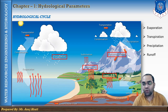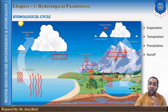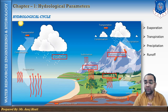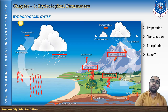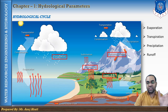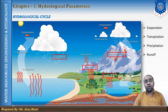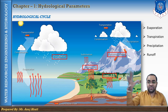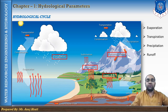Groundwater flow, or base flow, is the portion of precipitation which, after infiltration and percolation, joins the groundwater reservoir ultimately connected to the ocean. Precipitation essentially equals evaporation plus runoff. This was all about the hydrological cycle, which works continuously — precipitation, then evaporation and transpiration, and in between there is runoff.